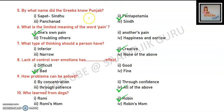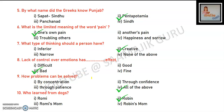Next question: By what name did the Greeks know Punjab? They knew it by the name Pentapotamia. Next: What is the limited meaning of the word pain — method of memory, method of mind, or method of emotion? What kind of thinking should a person have? Problems can be solved through concentration and confidence — all of the above.